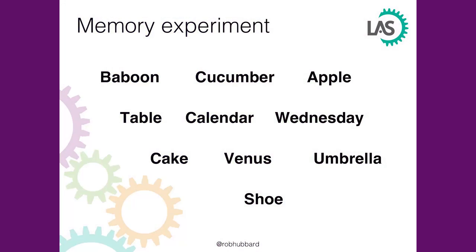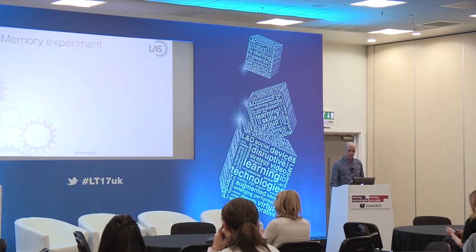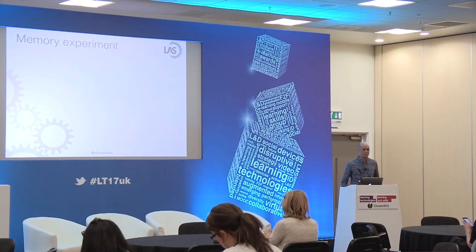So this is our memory experiment. You are all subjects of the experiment and you don't get a choice. What I'd like you to do now is spend a minute looking at these ten words — ten just pretty much random words. You're not allowed to write them down. Just look at them for one minute and do your best to remember them.